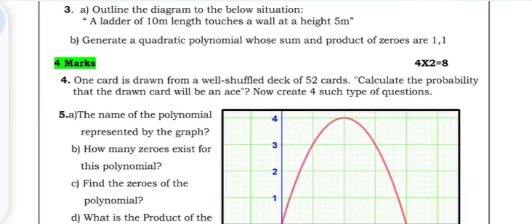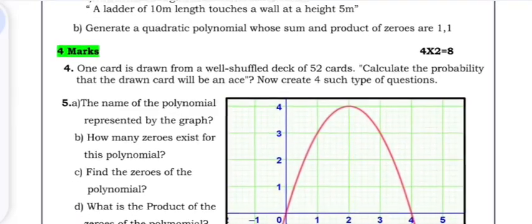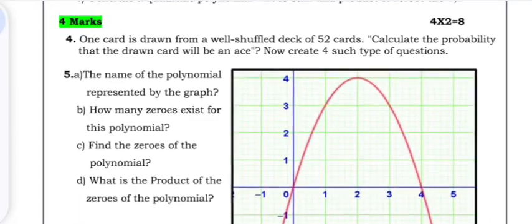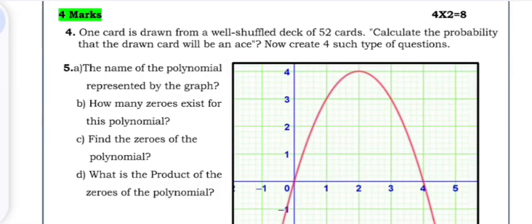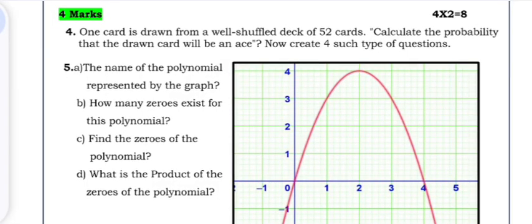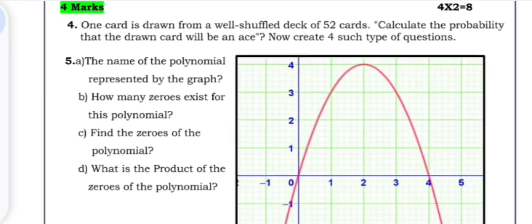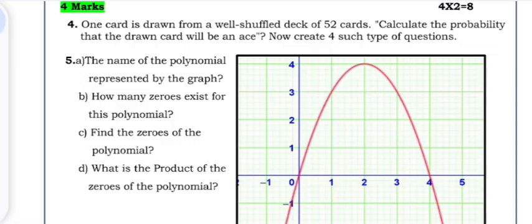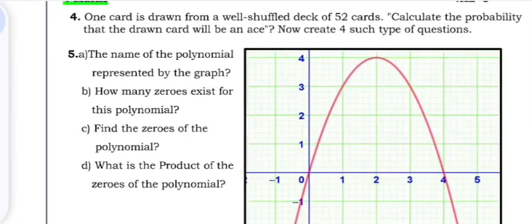Question 3b: Generate a quadratic polynomial whose sum and product of zeros are 1 and 1. Question 4: One card is drawn from a well shuffled deck of 52 cards. Calculate the probability that the drawn card will be an ace. Now create four such type of questions.